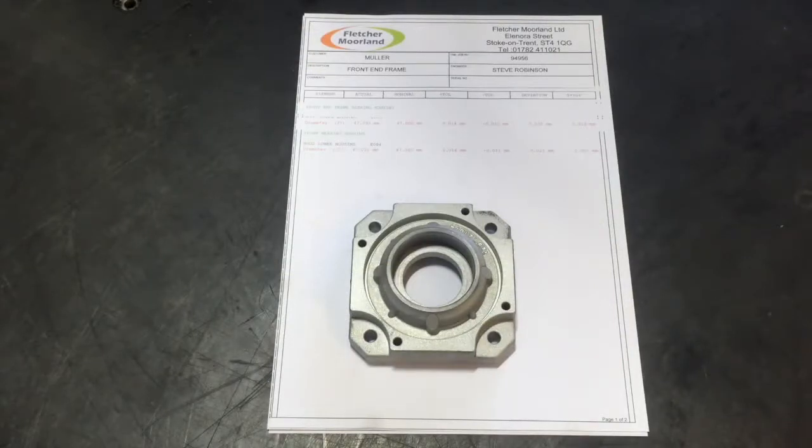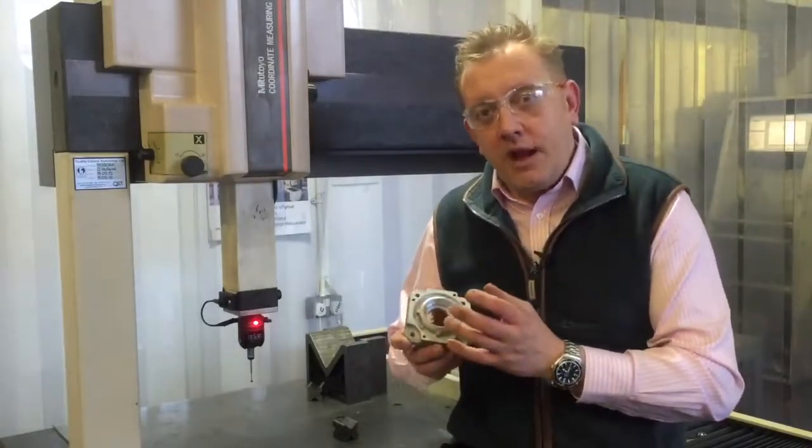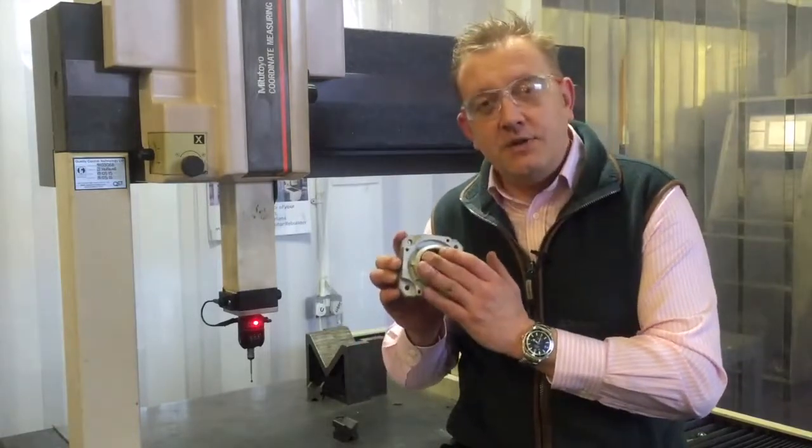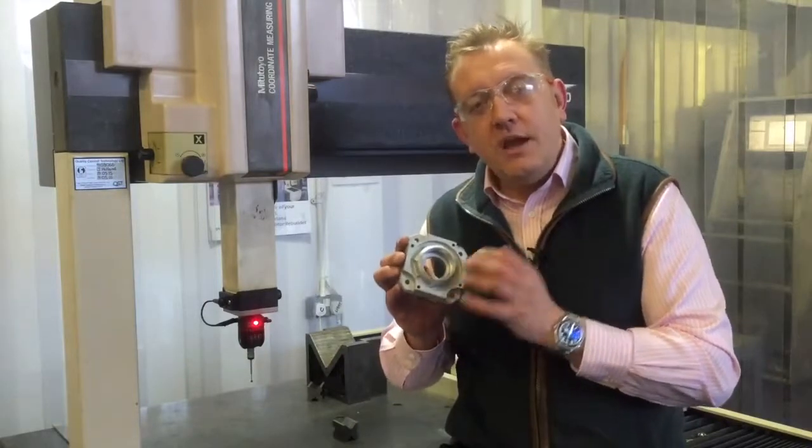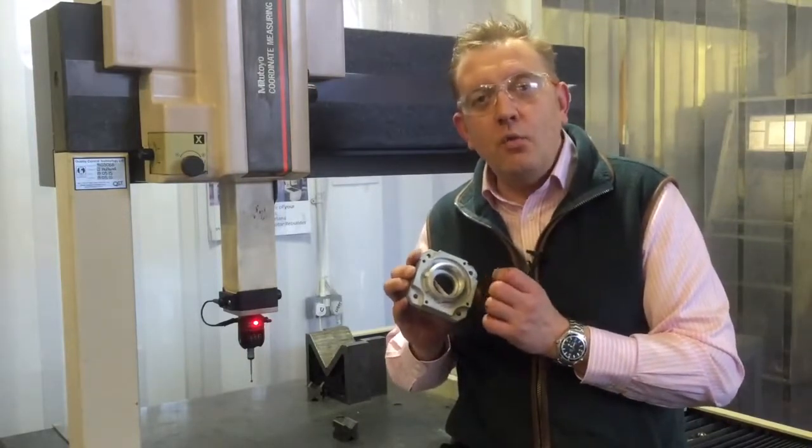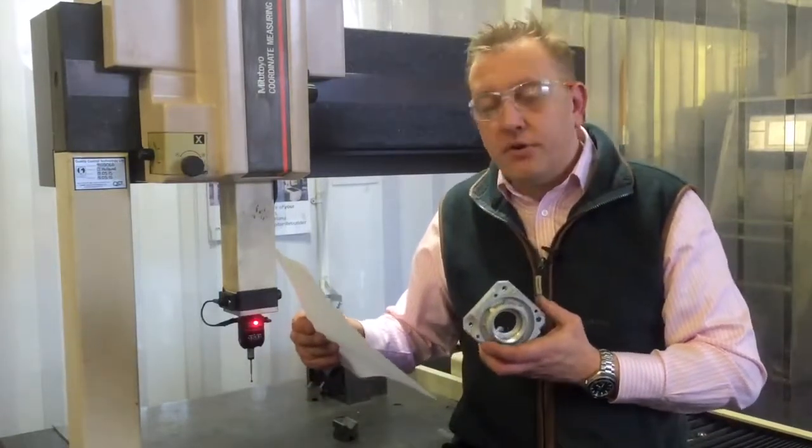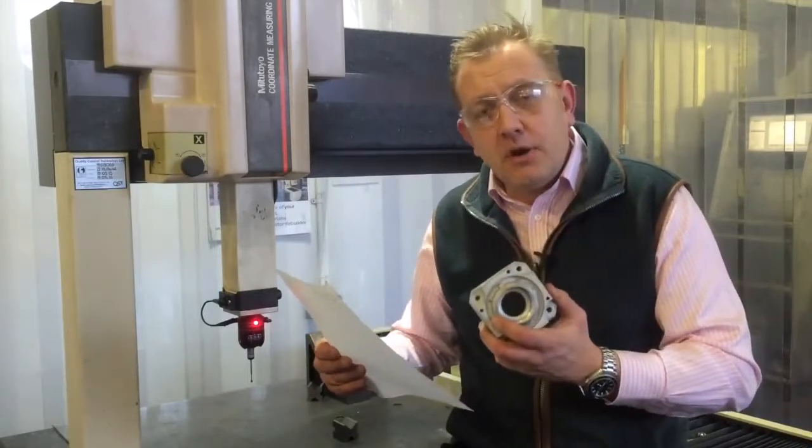All measurements have now been taken for this servomotor and what we have found is the drive end frame, the bearing housing there is oversized. I would just like to explain what it means when we say the bearing housing is oversized. It is where the bearing sits in this housing here. There is a tolerance and the upper tolerance for this bearing housing is 47.014mm. We have measured this and it is 47.030mm, which is 0.016mm, 16 microns.